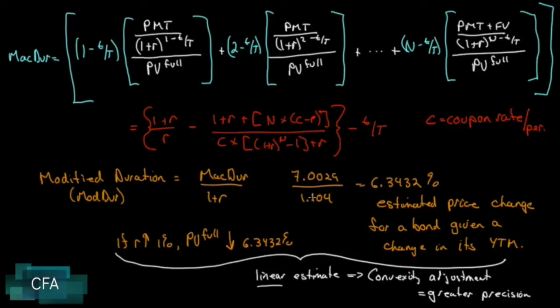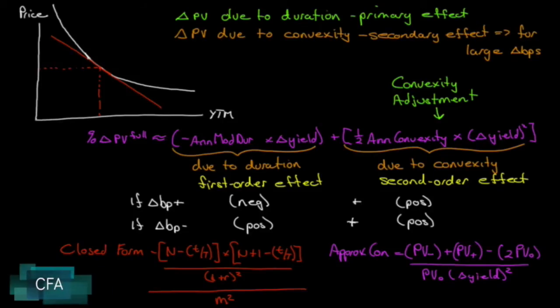So we're good here, let's move on. Let's look at convexity. We've already done duration based on a linear assumption of the bond price yield curve. Now we're going to do it the right way.